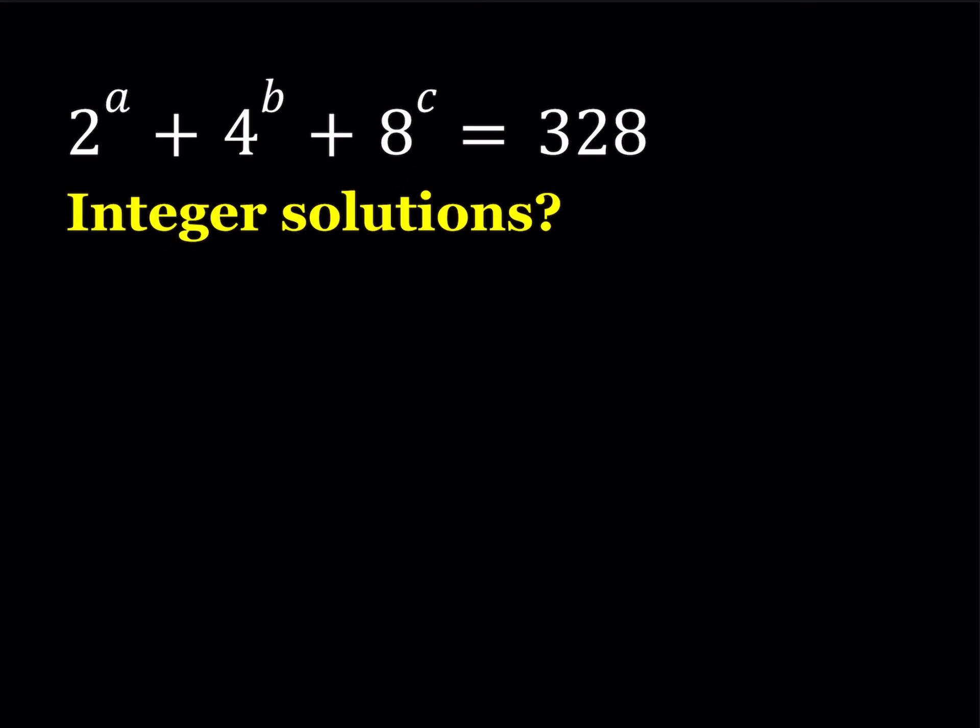One of the things that's nice about this equation is that all the bases are powers of 2, so we can express each one as a power of 2. Let's go ahead and do that first. I can write this as 2 to the power a plus 2 to the power 2 to the power b plus 2 to the power 3 to the power c.